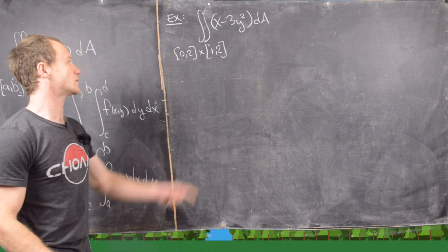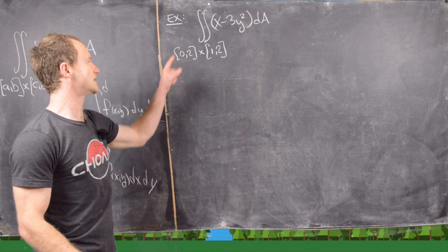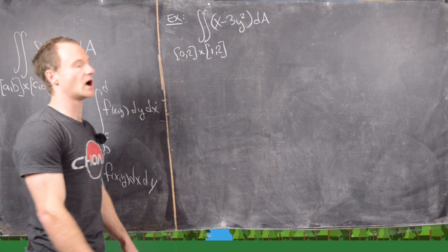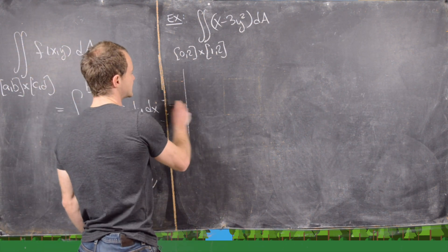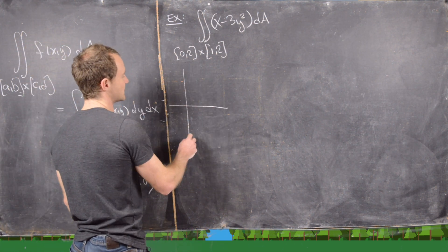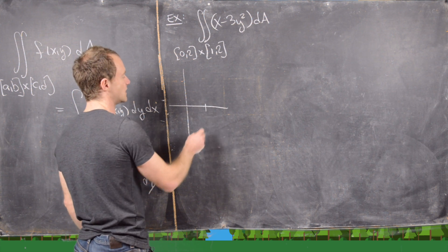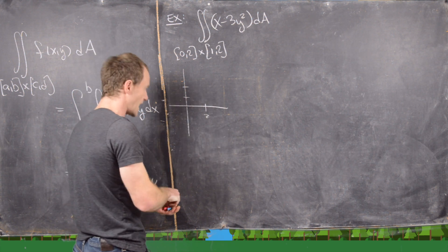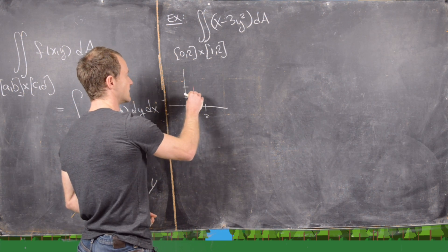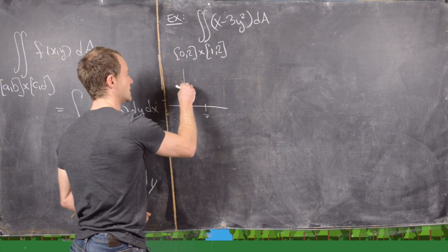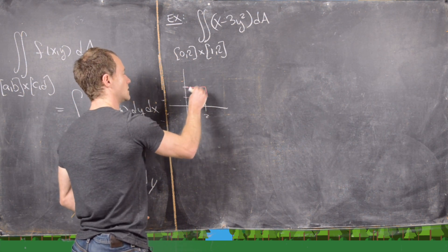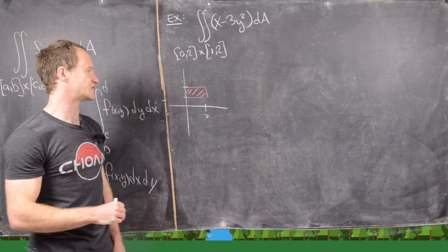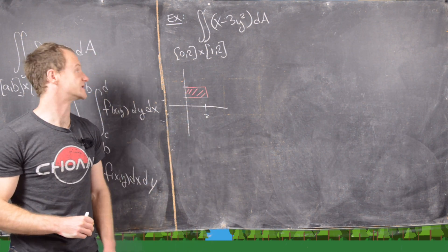The first example is the double integral over the rectangle [0,2] cross [1,2]. Notice that looks something like this: we have 0 to 2 along the x-axis and 1 to 2 along the y-axis. Although that visualization won't really matter so much in the calculation.